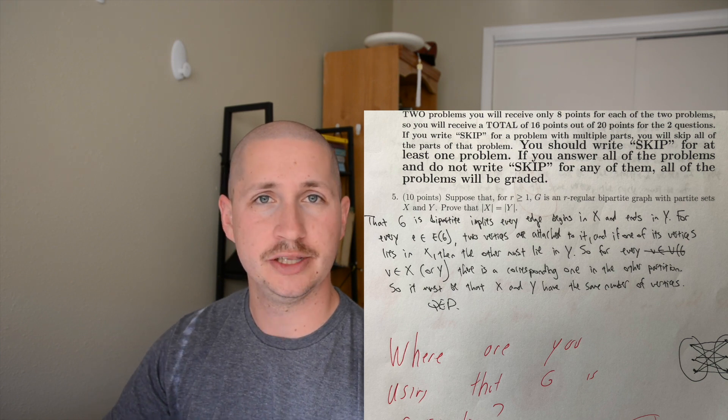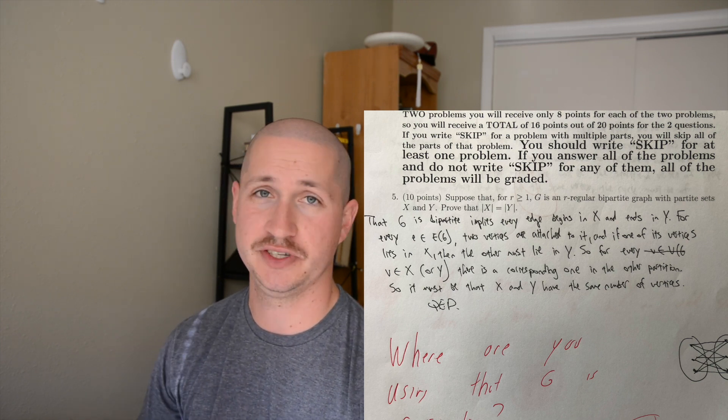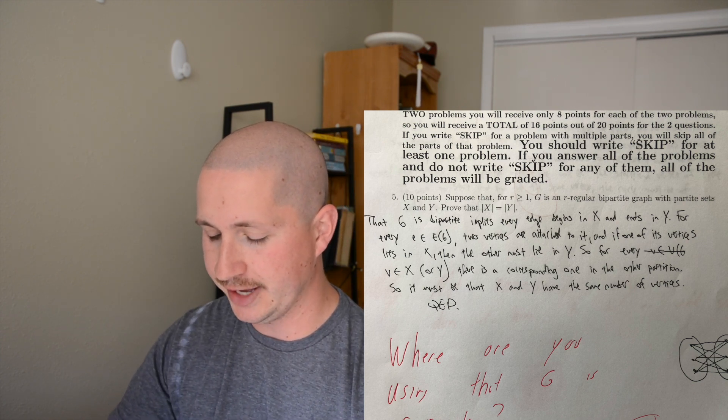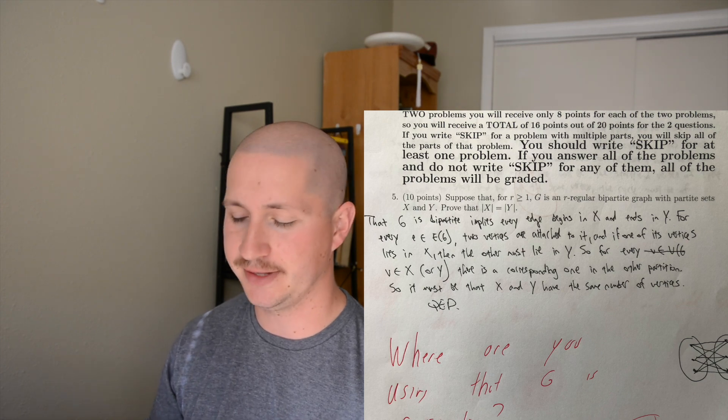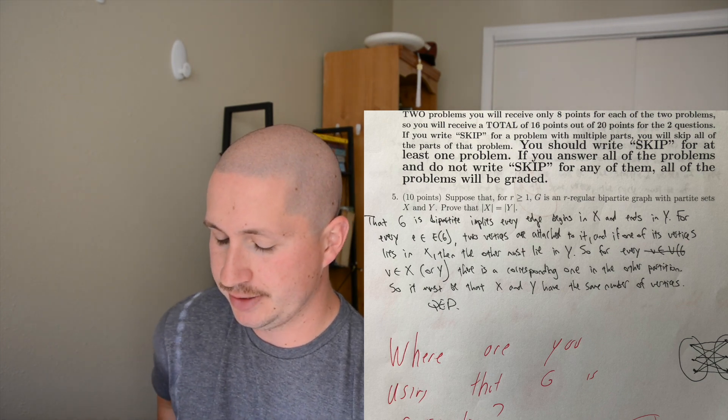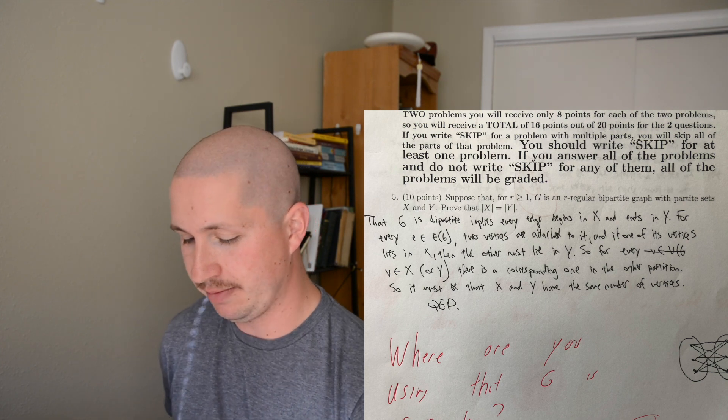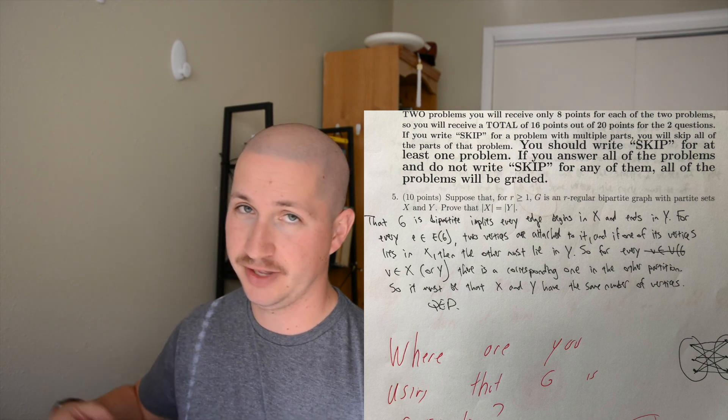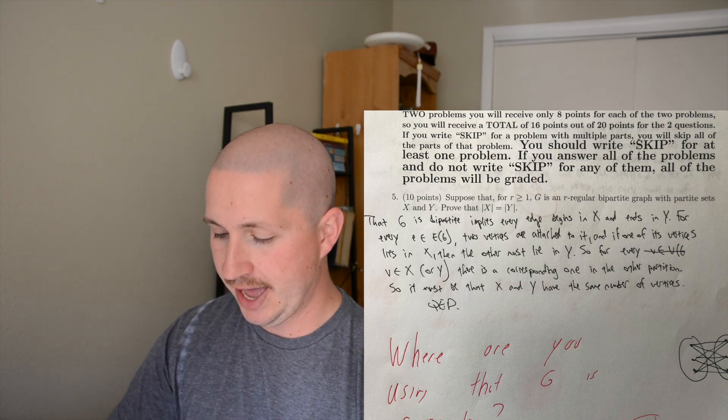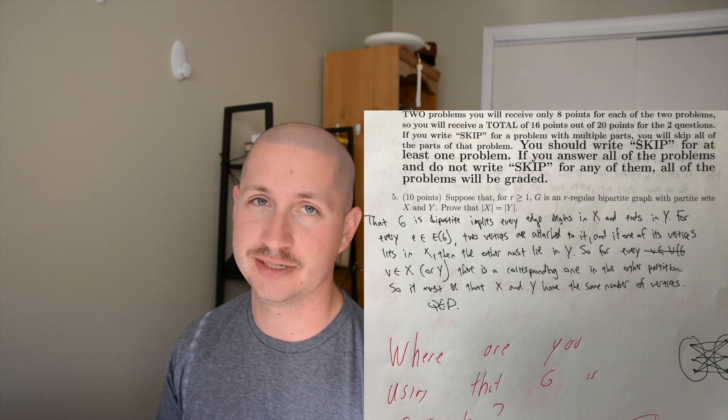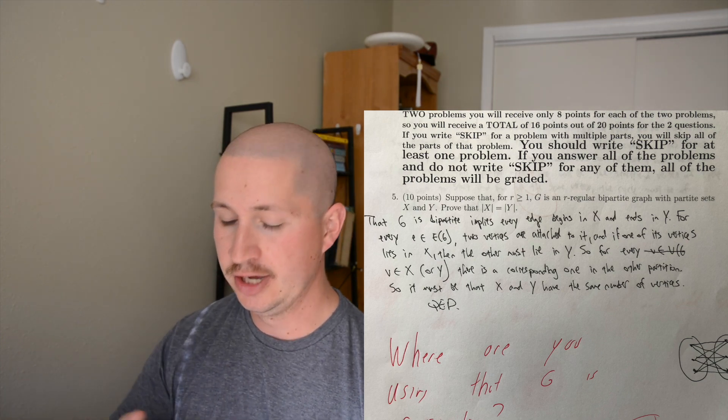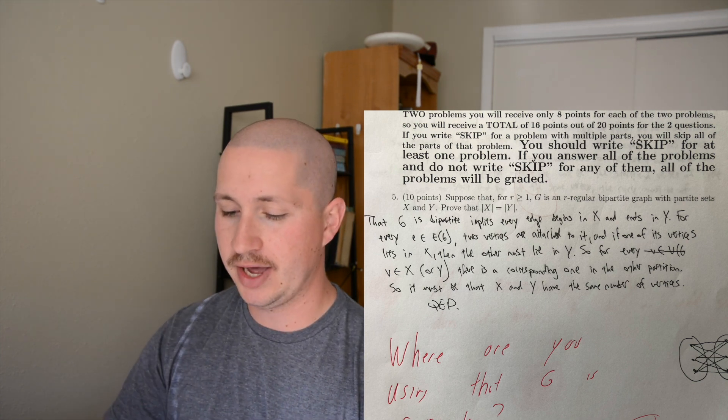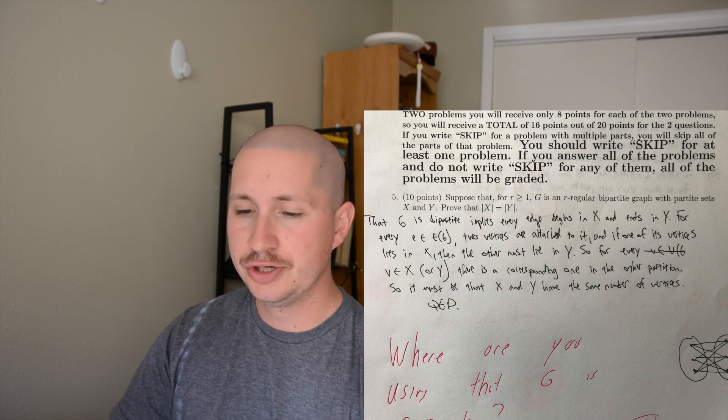I know that more often than not, actually always, I'm gonna need to know what those things are. If I'm doing a direct proof like this, it's really helpful, and a lot of times that will give me some good key ideas for starting my proof and getting the first couple steps. That's what my first line is: the fact that G is bipartite implies every edge begins in X and ends in Y. That's just a statement of fact, a definition, and I use that definition to make my next statement. For every edge in the set of edges, two vertices are attached to it. If one of the vertices lies in one partition, then the other must lie in Y, also by definition.